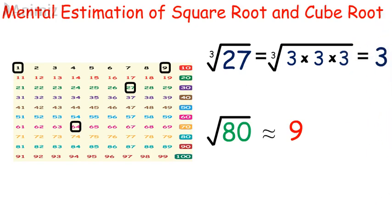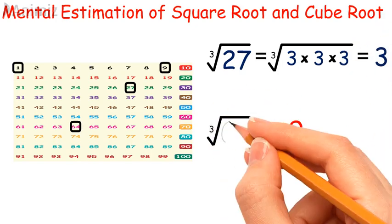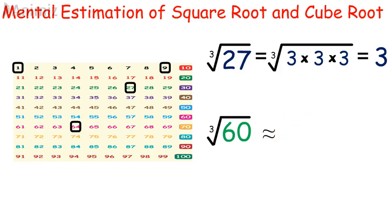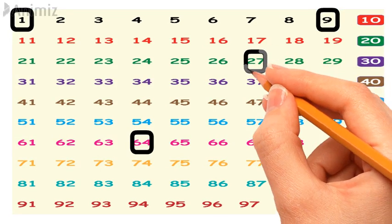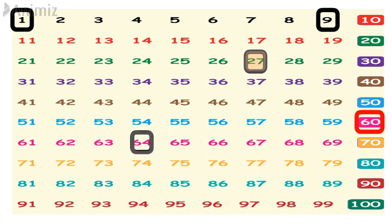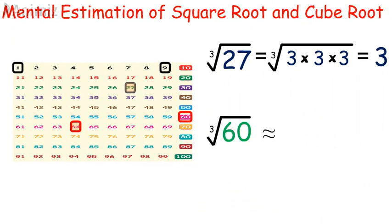But what about 60? Can we find the cube root of 60? We can't, but we can estimate. There are two perfect cubes which are closer to 60: the first is 27, and the second is 64. Now, which one is much closer? As you can see, 64 is much closer than 27. So the cube root of 60 is approximately 4.